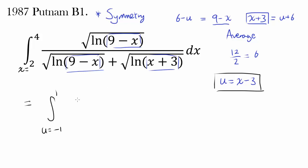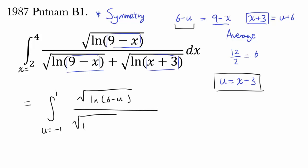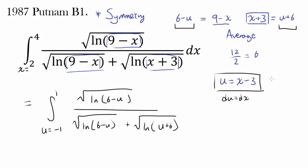We now have the integral with square root of natural log of (6 minus u) in the numerator, over square root of natural log of (6 minus u) plus square root of natural log of (u plus 6). Since u equals x minus 3, du equals dx, so we have du.